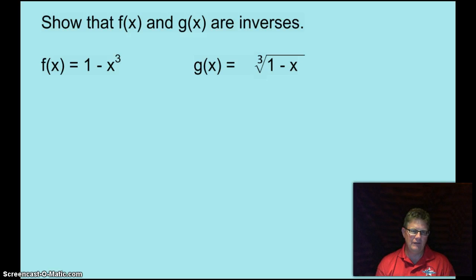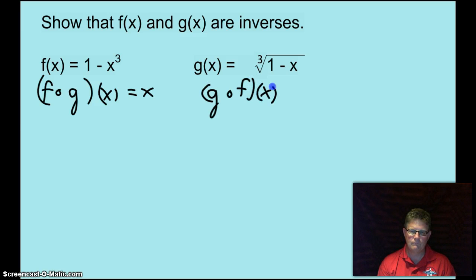Alright, now we're going to show that F of X and G of X are inverses. F of X equals 1 minus X cubed and G of X equals the cube root of 1 minus X. So we need to show that F dot G of X equals X and we also need to show that G dot F of X of X equals X.